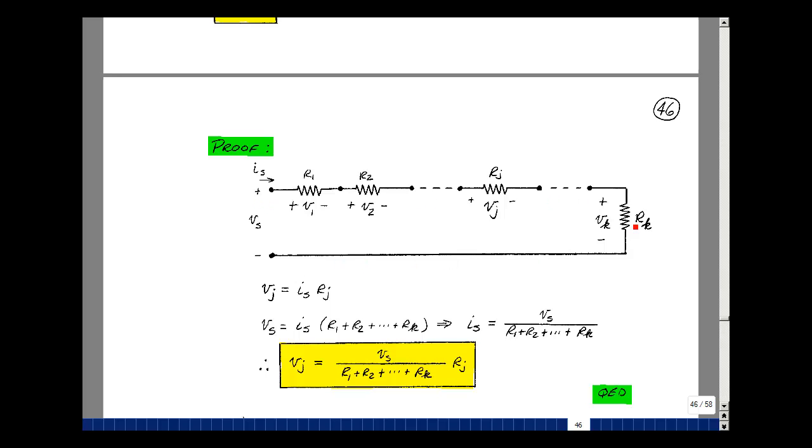Let's do Kirchhoff's voltage law. The rise in voltage would equal the drops around the loop. Because the current's flowing in this direction, we'll have a plus and minus, plus and minus, and so on, because of our definition of Ohm's law using the passive sign convention.